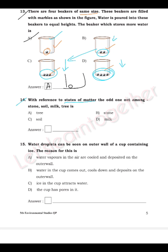Question 14: With reference to states of matter, find the odd one out — stone, soil, milk, or tree. Stone, soil, and tree are solids, while milk is a liquid. So the odd one out is D — milk.